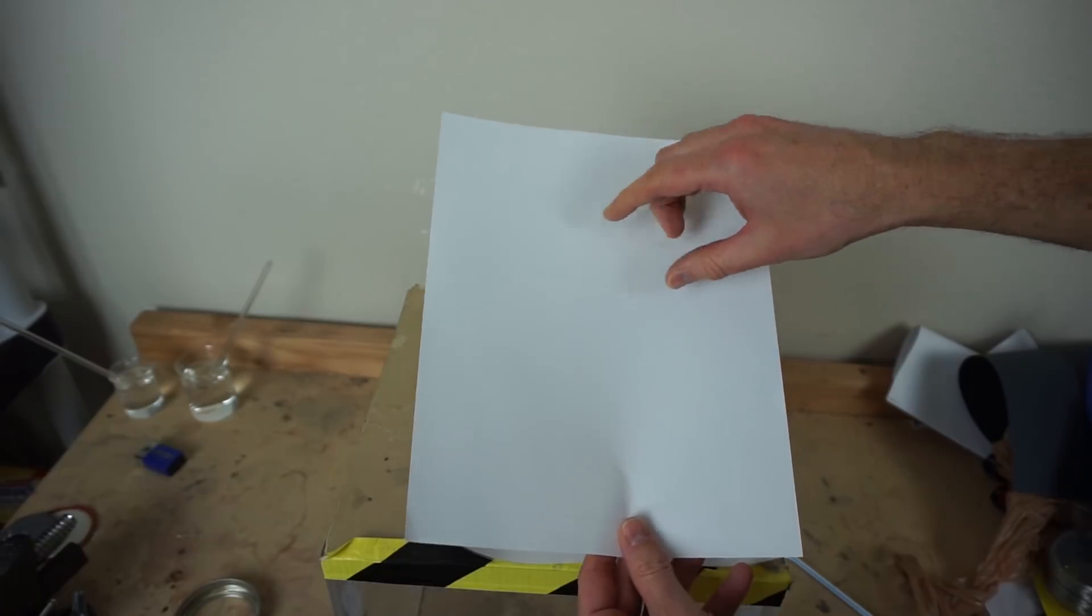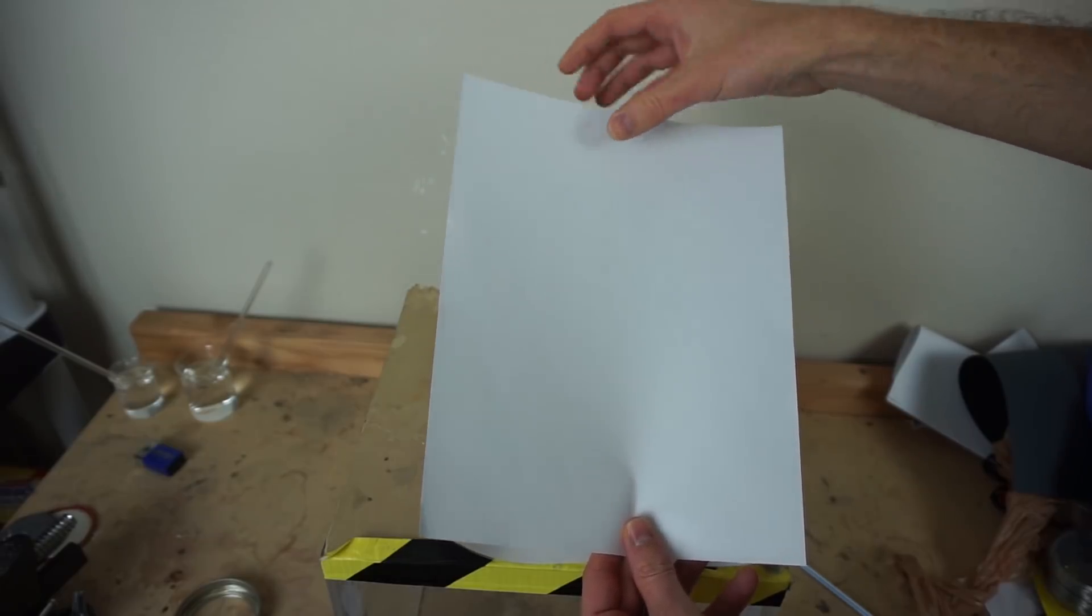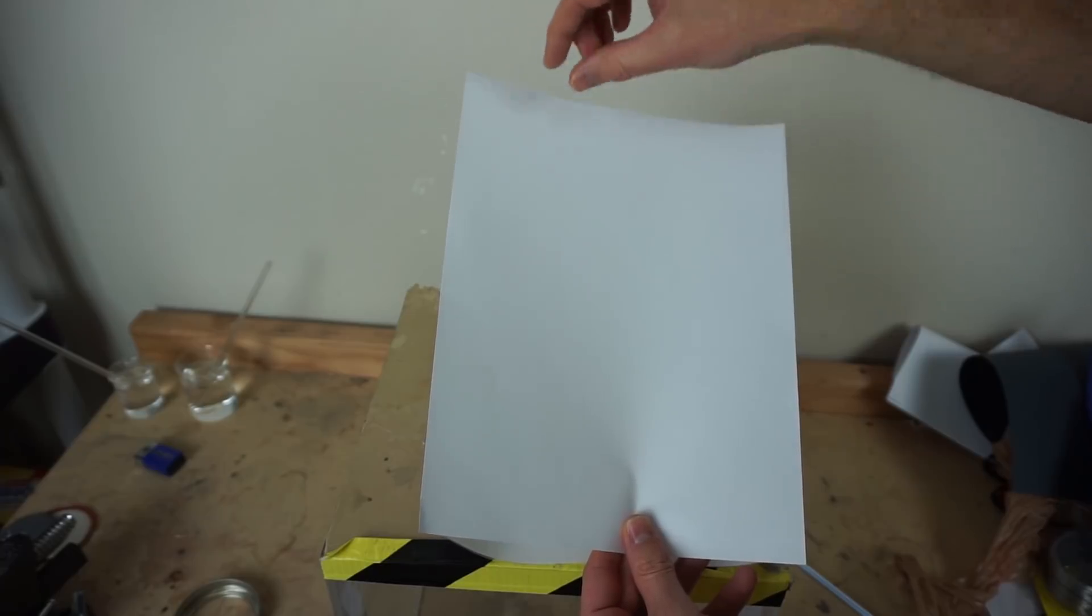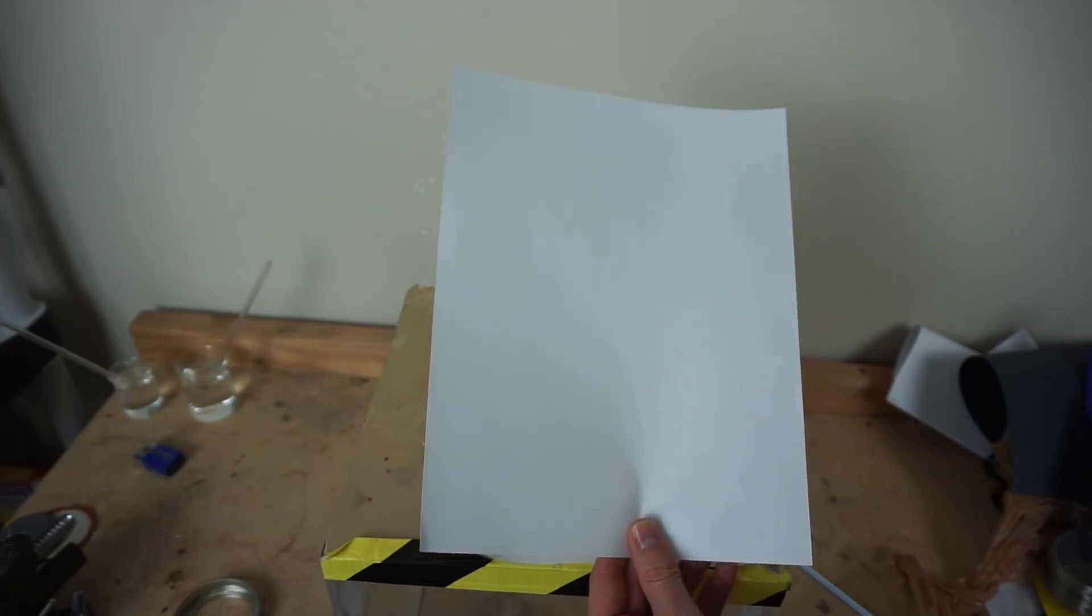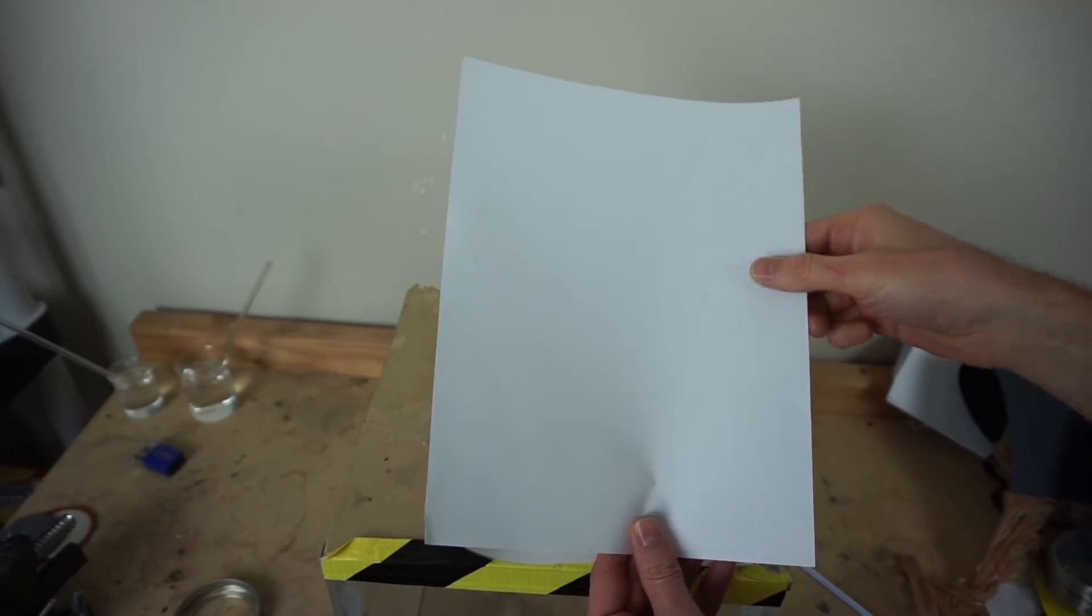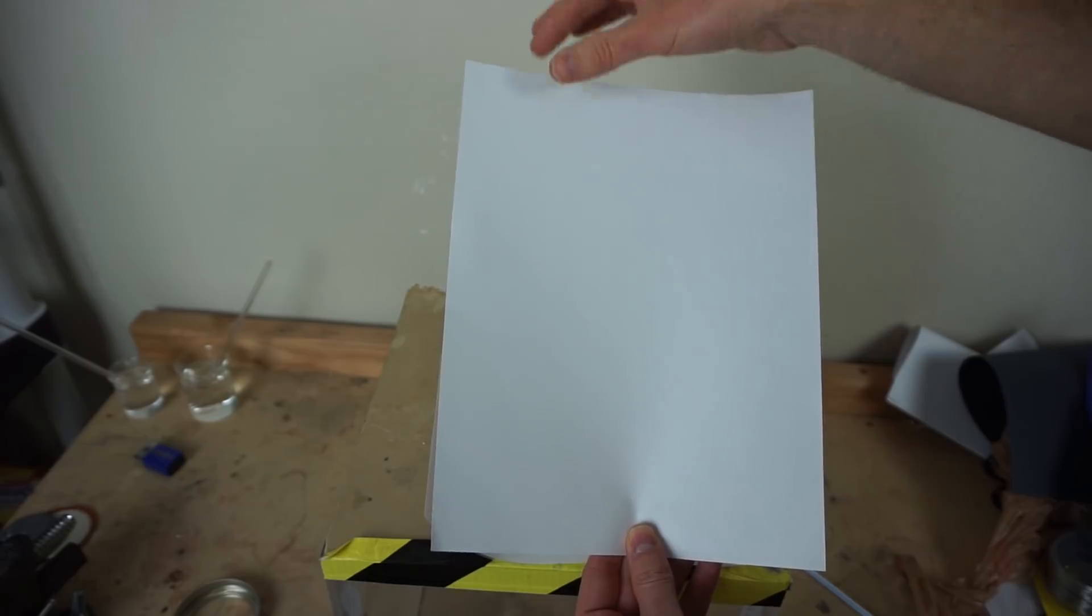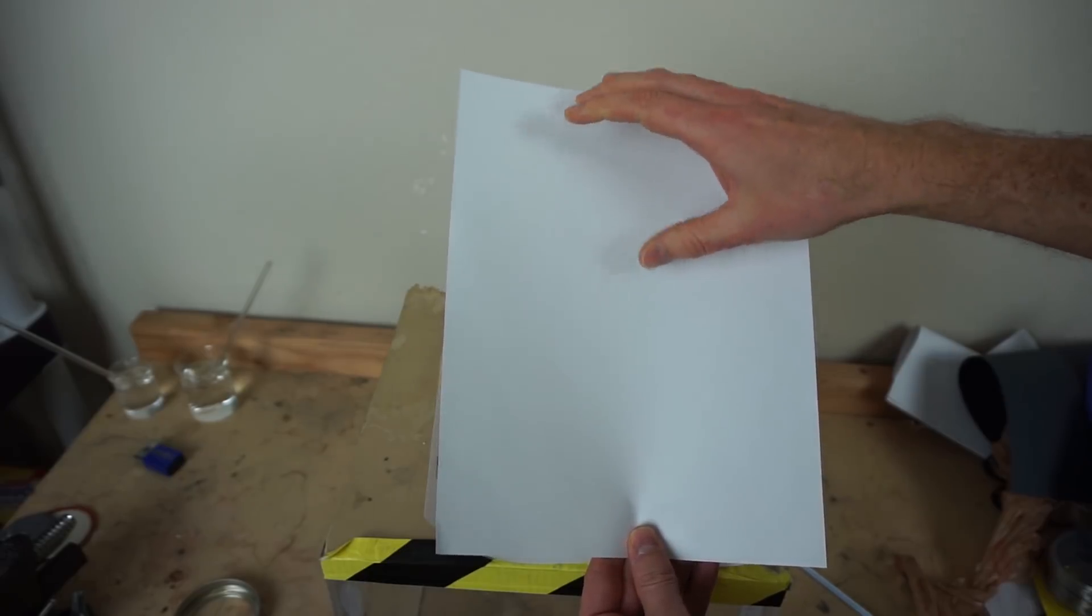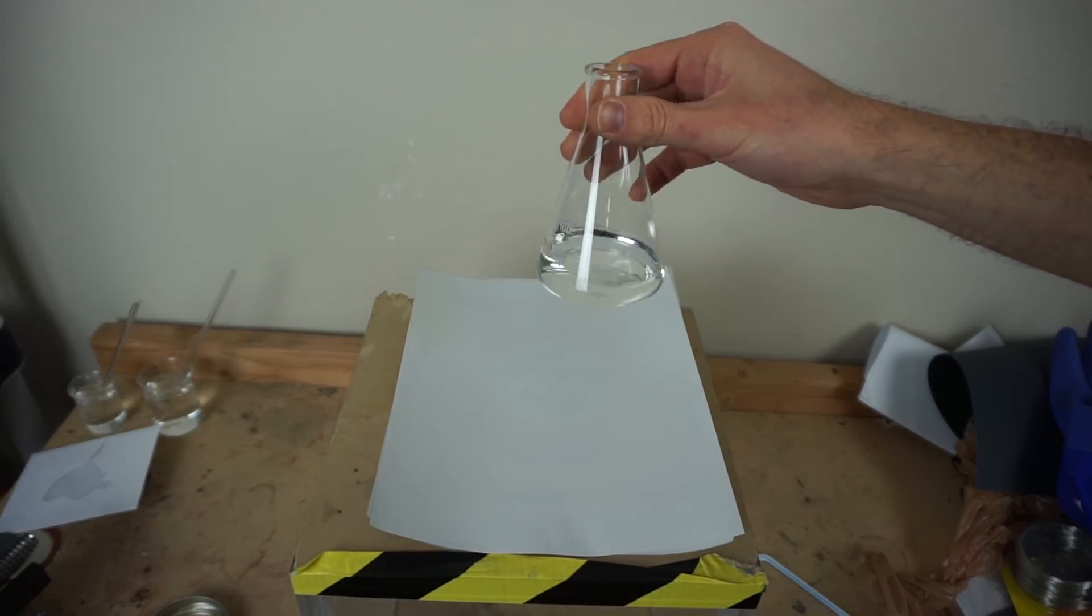So right now we can't see through this paper because the paper is made of cellulose, and it's also filled with little air pockets. So between the cellulose and the air, they have very different refractive indices, and so there's a lot of light bending that goes on. So essentially none of the light is going through it, but it's getting scattered all different directions. But if we can replace the air in this paper with something that has a closer refractive index to the cellulose, then we should be able to see through it. And something that's close to that is isopropyl alcohol.